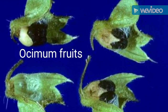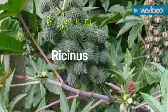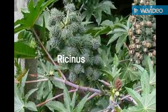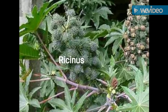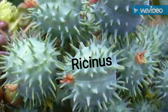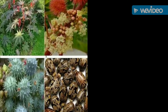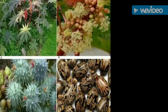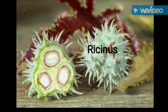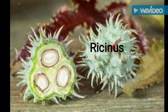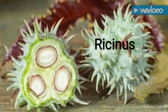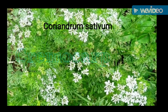Next one — regma. It is a schizocarpic fruit developed from a trilocular superior ovary of tricarpellary syncarpous gynoecium. At the time of maturity, this fruit splits into three one-seeded mericarps called cocci. Example: Ricinus communis (castor). It is tricarpellary.